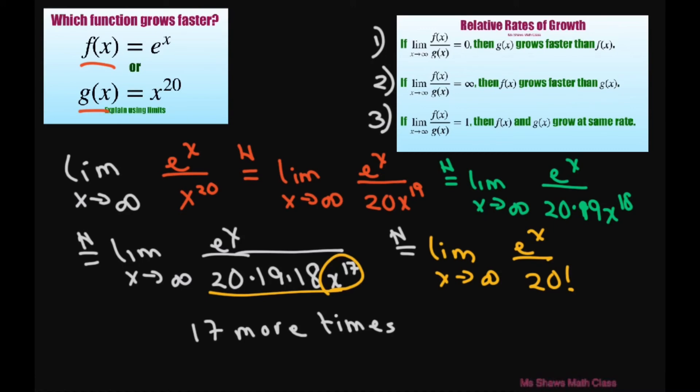So this is going to go to infinity, because this is a constant and the numerator is going to get larger and larger. So that means f of x equals e to the x grows faster. It's condition 2.